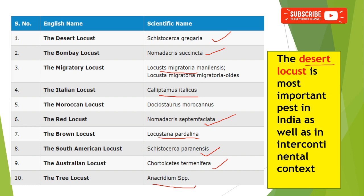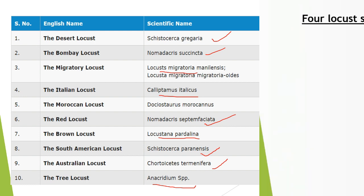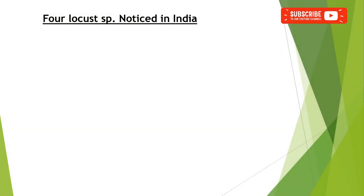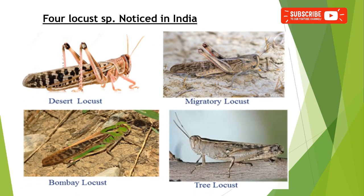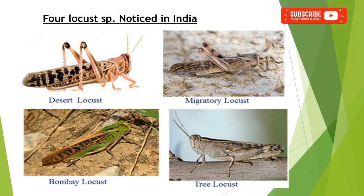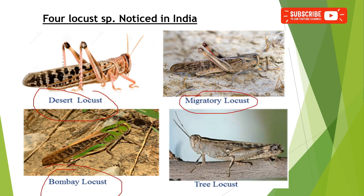The four locust species which are mainly noticed in India are: the desert locust, migratory locust, Bombay locust, and the tree locust.